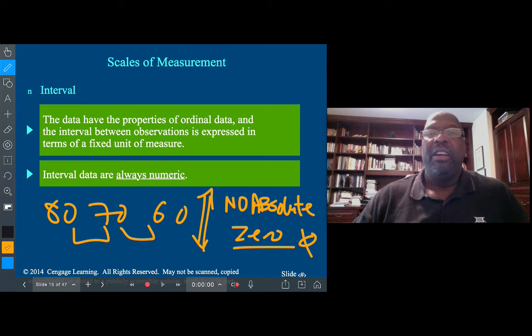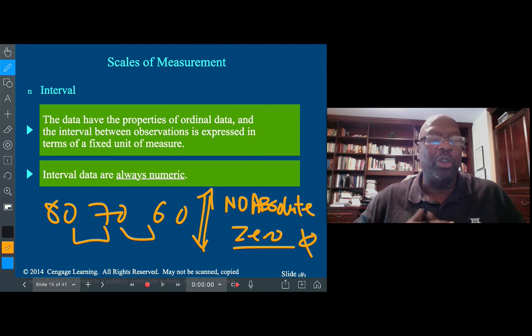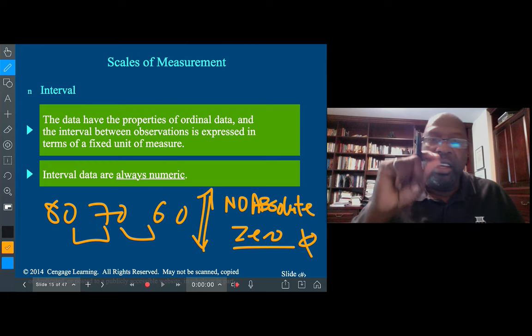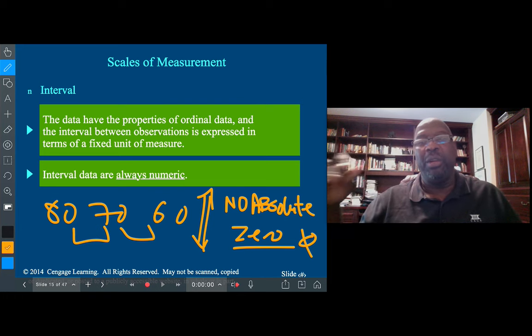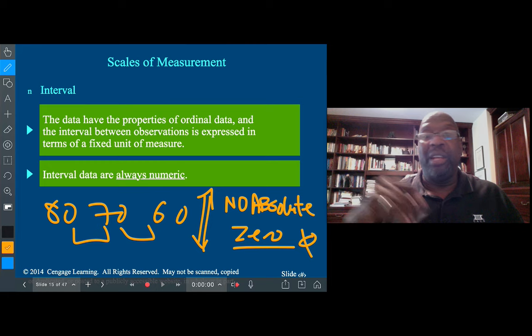Part of the characteristic of interval data is that it has no absolute zero. Zero temperature doesn't mean that temperature doesn't exist; it's just a reference. I'll give you another example: customer satisfaction values - five is extremely satisfied, four is satisfied, three is neutral, two is not so satisfied, one is very dissatisfied. Zero doesn't mean that satisfaction doesn't exist; it's just another reference point.